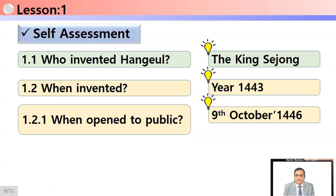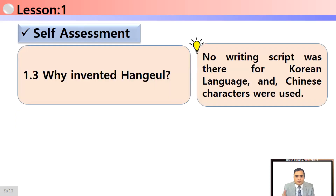Now it's time for self-assessment. Who invented Hangul? King Sejong — memorize these important facts. Invented in the year 1443, opened to the public on 9th October 1446. Why was it invented? Because there were no letters for the Korean language and Chinese characters were used at that time.